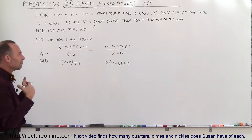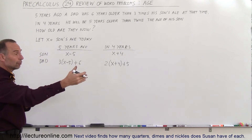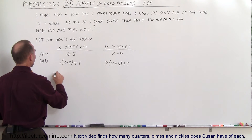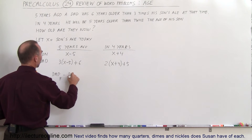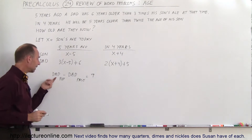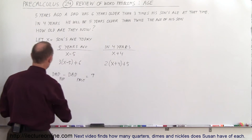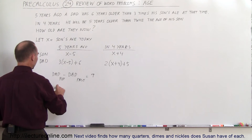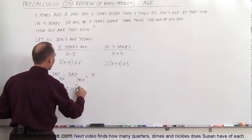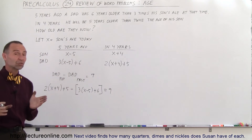Now we need an equation to figure out what X is equal to. We know the difference in age between the father's age in the future versus the father's age in the past should be nine years. So dad's age in the future minus dad's age in the past equals nine. That gives us: two times (X plus four) plus five, minus the quantity three times (X minus five) plus six, equals nine.